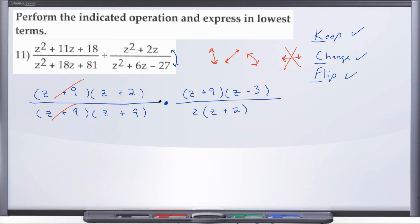Now comes the fun part — we get to cross out all the common factors. Just for review: you can cancel up and down, you can cancel diagonally, but you cannot cancel left to right. So (z+9) and (z+9) left-to-right — you cannot cancel those. You can however cancel (z+9) with (z+9) up and down, and again (z+9) with (z+9) diagonally — gone. Then (z+2) with (z+2) diagonally — gone.